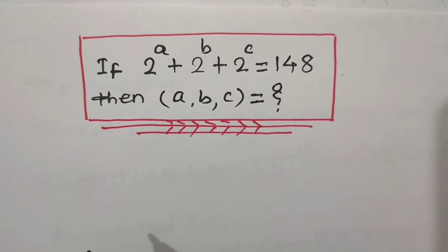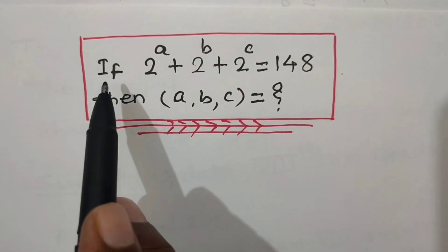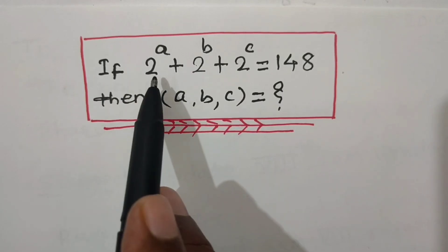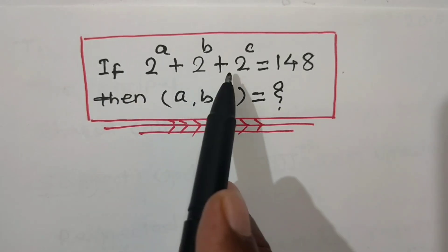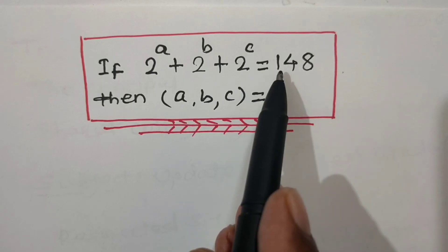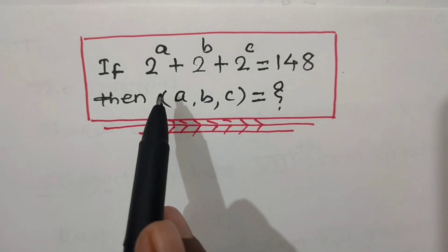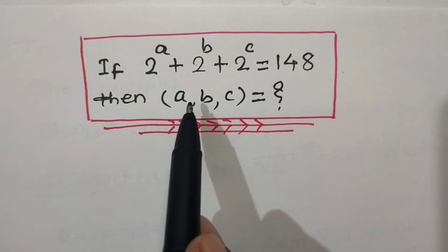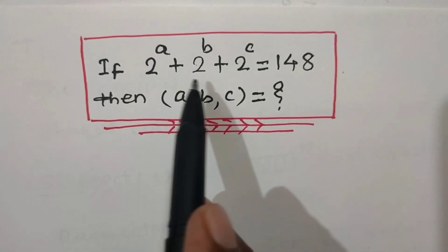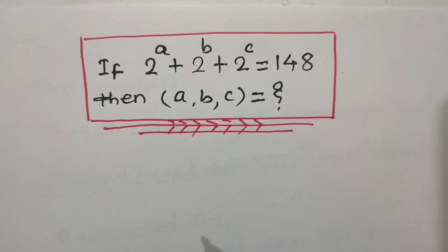Hello everyone. Let us solve an exponential equation: if 2 to the power a plus 2 to the power b plus 2 to the power c is equal to 148, then we have to find out values of a, b and c such that this equation will be satisfied.